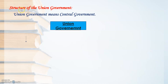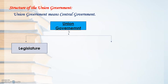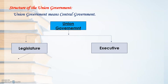Today we will understand the structure, or how the union government is made. There are two important parts of union government: Legislature and the Executive. We have learned that legislature is something that makes laws.